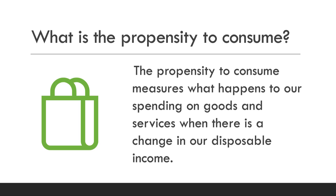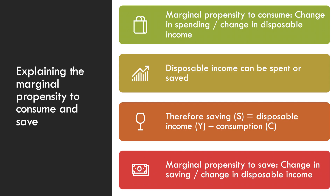So what is the propensity to consume? That's the word which means what happens to our spending — our total spending on goods and services — when there's a change in our disposable income, income after tax and benefits. Two concepts here: the marginal propensity to consume (MPC) and the marginal propensity to save. The MPC is the change in our spending following a change in our disposable income — the extra bit of any additional income that is spent rather than saved. For example, if income grew by £100 a week and we choose to spend £80 of it, that would give a marginal propensity to consume of 80/100 or 0.8.